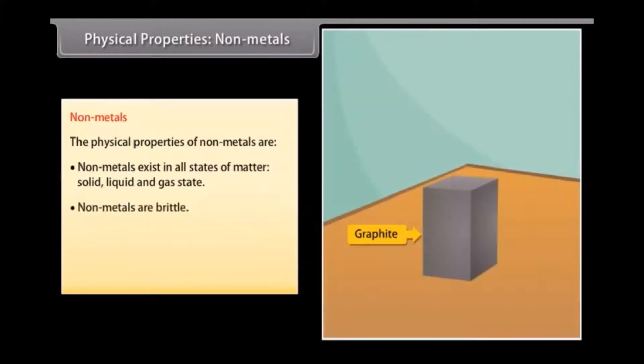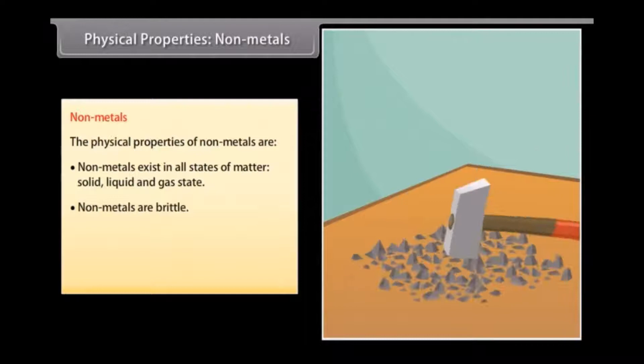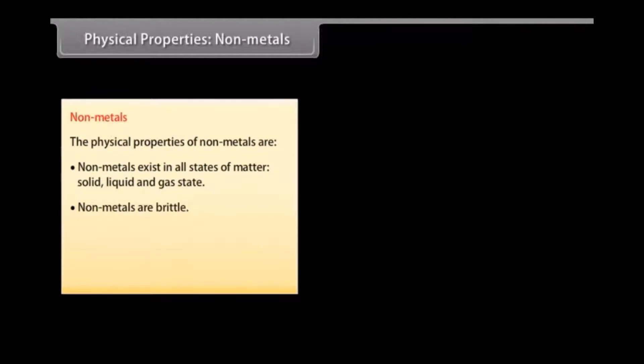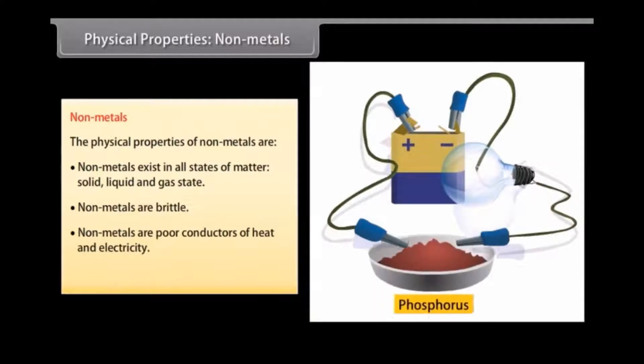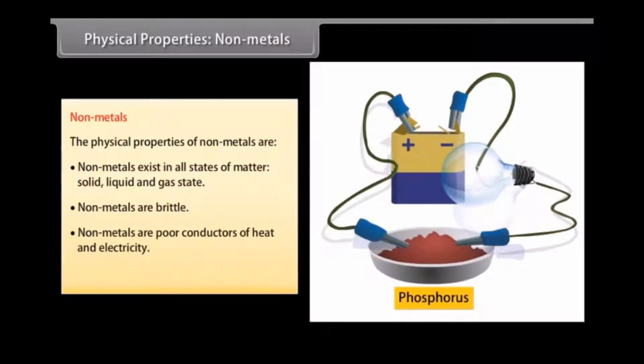Non-malleable and non-ductile: Non-metals are brittle and cannot be rolled into wires or beaten into sheets. Poor conductors of heat and electricity: Non-metals are poor conductors of heat and electricity. Graphite, carbon, is an exception as it is a good conductor of electricity and is used in making electrodes.